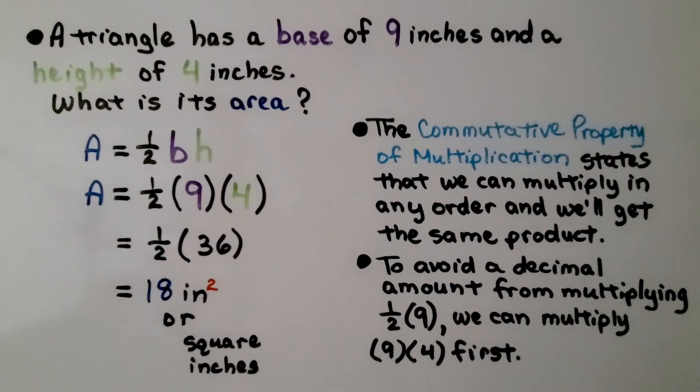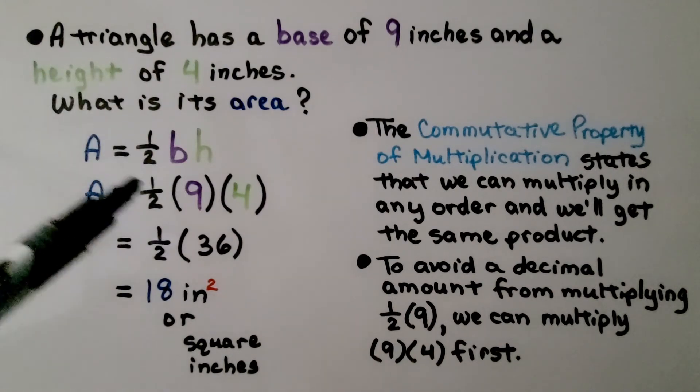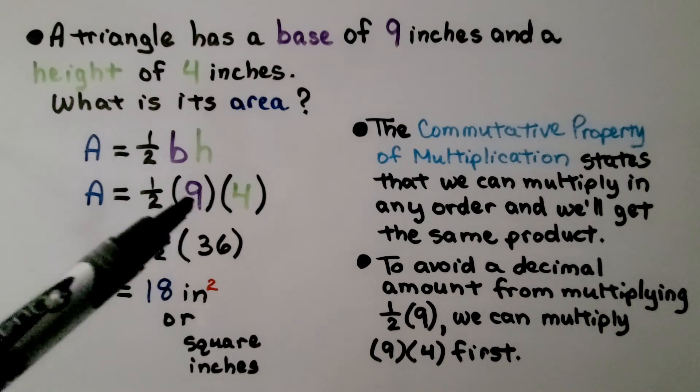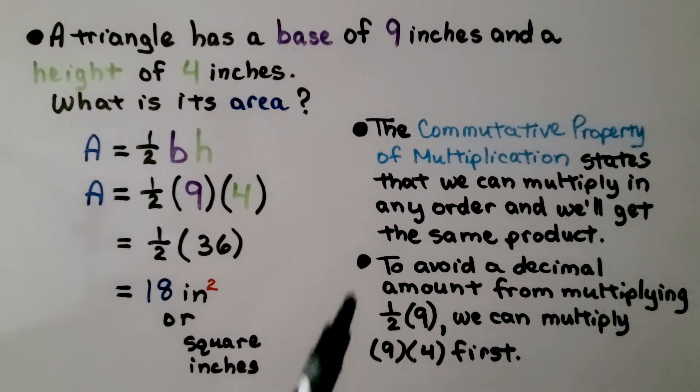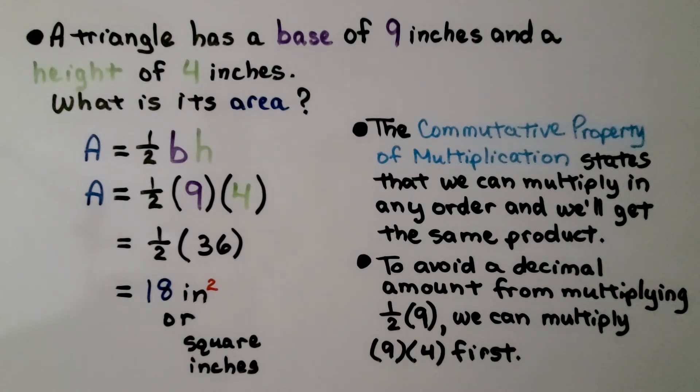Let's try it without a diagram. A triangle has a base of nine inches and a height of four inches. What is the area? The formula is A is equal to half b h. We know our base is nine, our height is four, we substitute them into the formula. And the commutative property of multiplication states that we can multiply in any order and we'll get the same product. To avoid a decimal amount from multiplying half times nine, we can multiply nine times four first. Now we have half times 36, that gives us 18, a whole number. We write it as 18 inches squared or square inches.